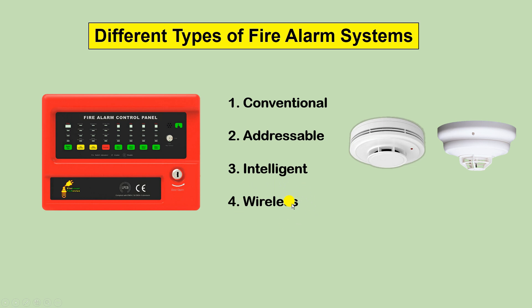The fourth type is wireless. In a wireless system, there is no need to do any wired connection between the detector and the control panel — the whole communication is wireless. So fire alarm systems are of four types.